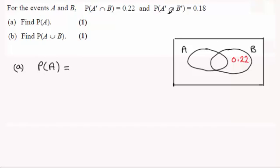And for this one the probability of not being in A and not being in B is 0.18. And that's the region outside here. You're not in A and at the same time not in B. So that's 0.18.